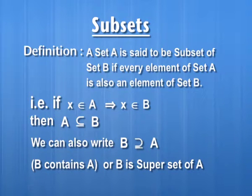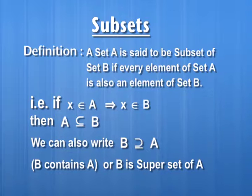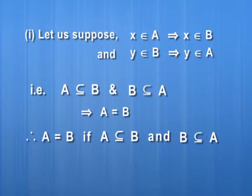The definition of subset can be given as: a set A is said to be a subset of set B if every element of set A is also an element of set B. Symbolically, we write: x belongs to A implies x belongs to B, then we say A is contained in B, or A is a subset of B. This can also be written as B contains A, meaning B is a superset of A.